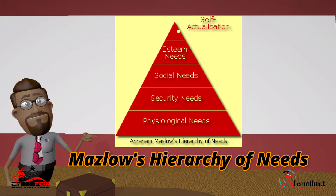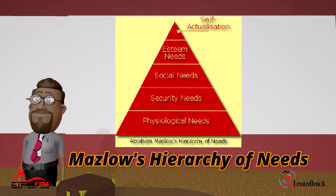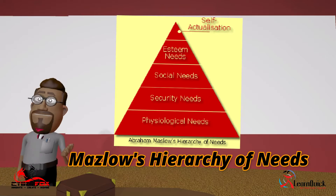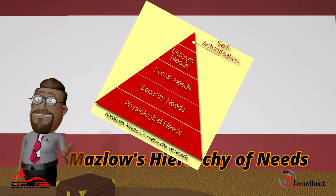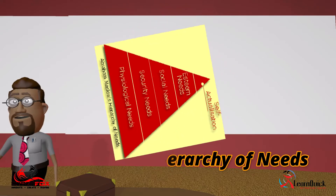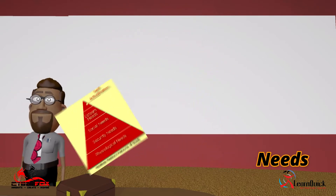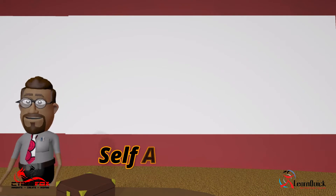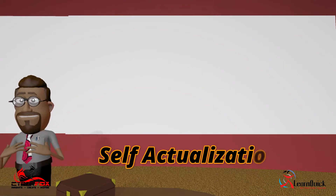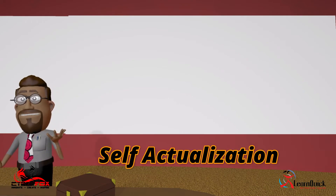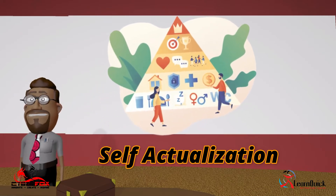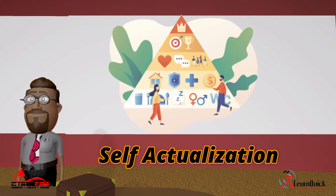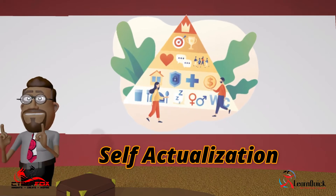The lower needs of the pyramid take priority. It does not make sense to worry about your looks when you do not have food to eat, which is why basic needs take priority over all other needs. In order for a person to achieve self-actualization, you need to satisfy all other needs first. Self-actualization is a complete understanding of who you are, a sense of completeness of being the best person you could possibly be.